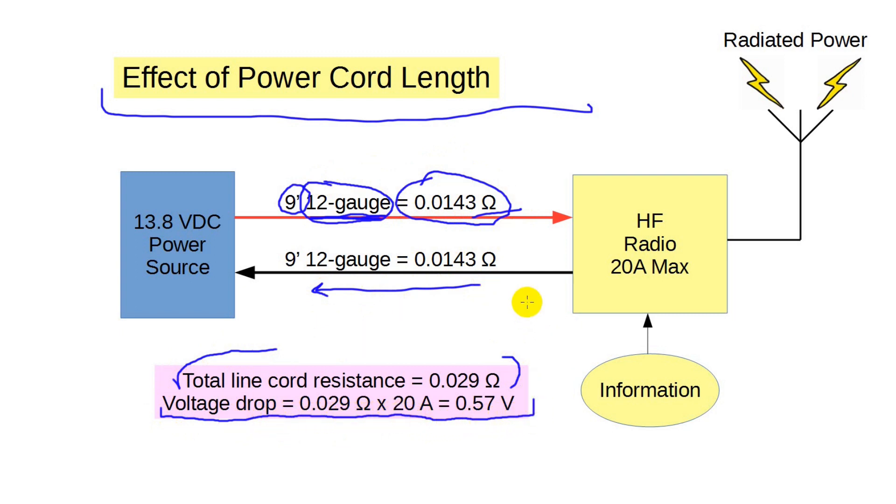So our 13.8 volts at the output of the power supply is actually 13.2 volts at the radio. Note that the connectors and fuses introduce their own resistance too.